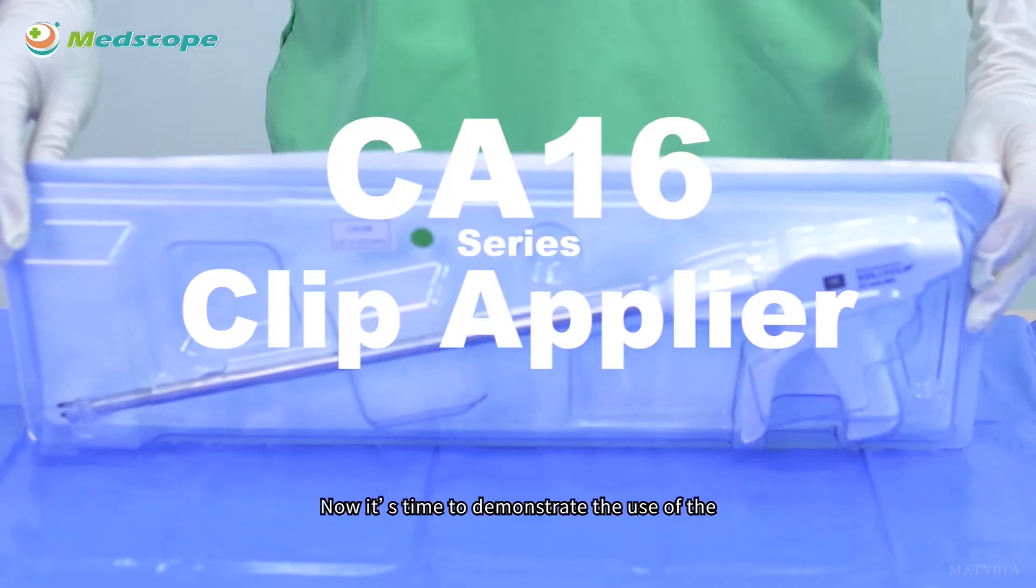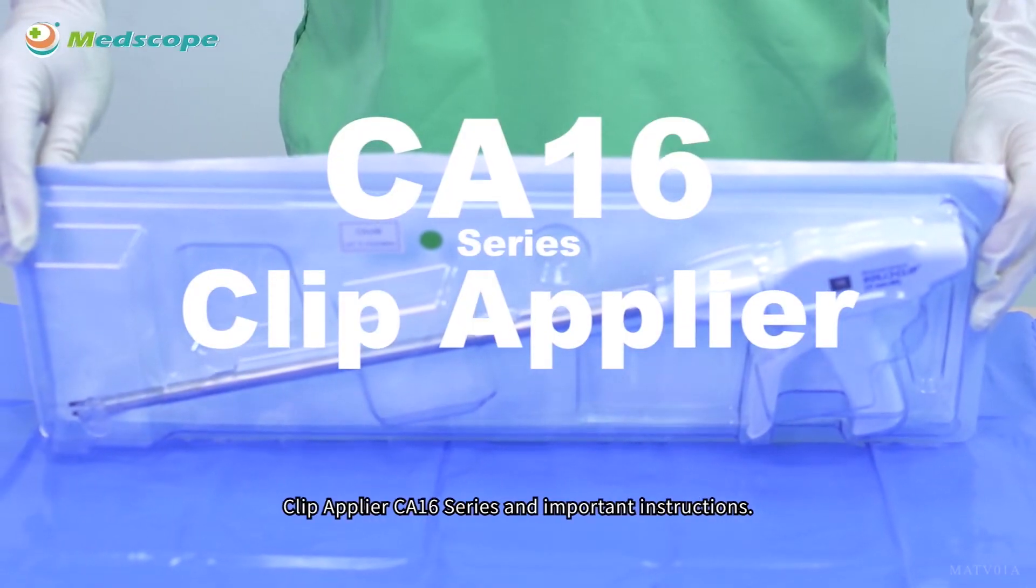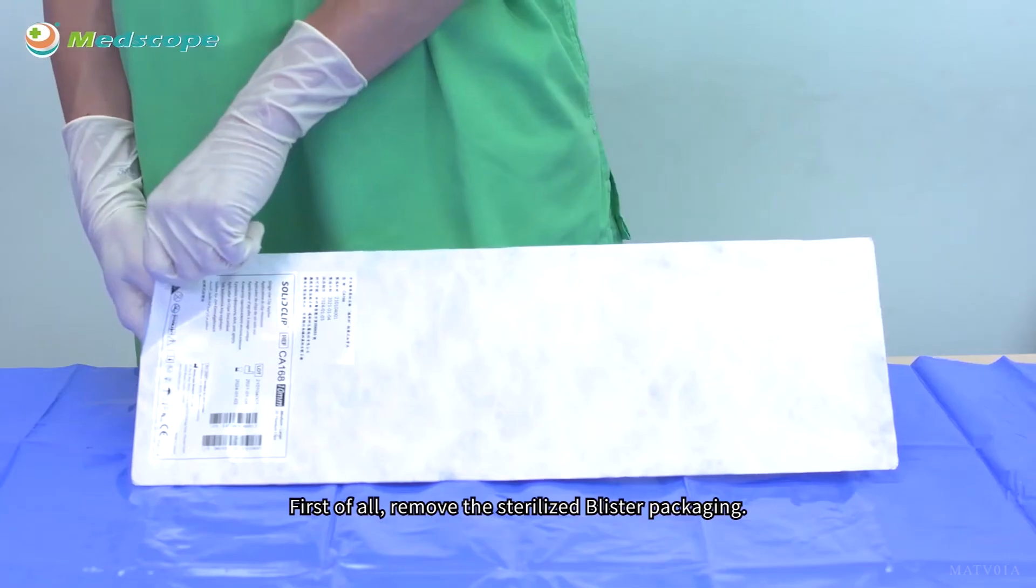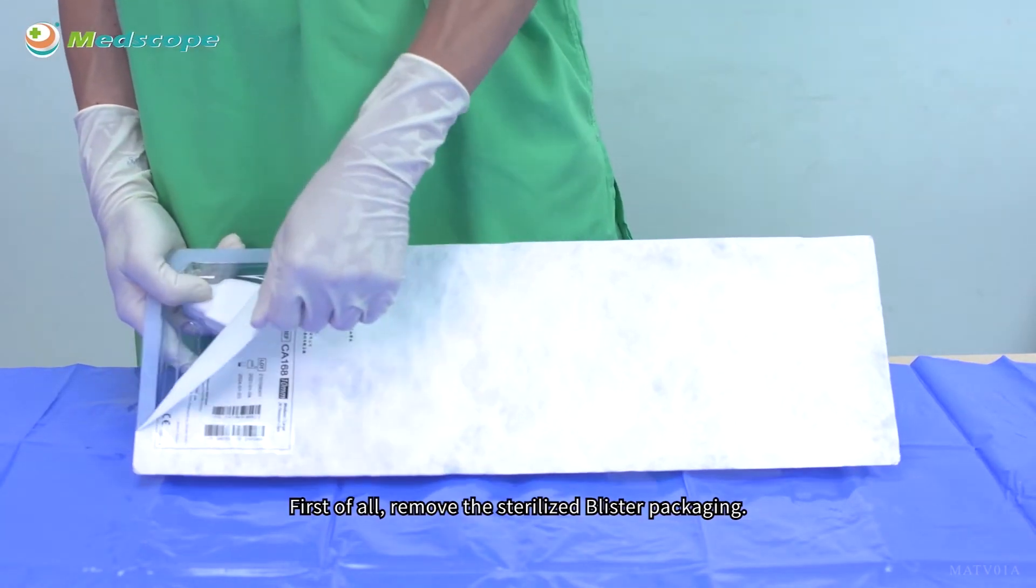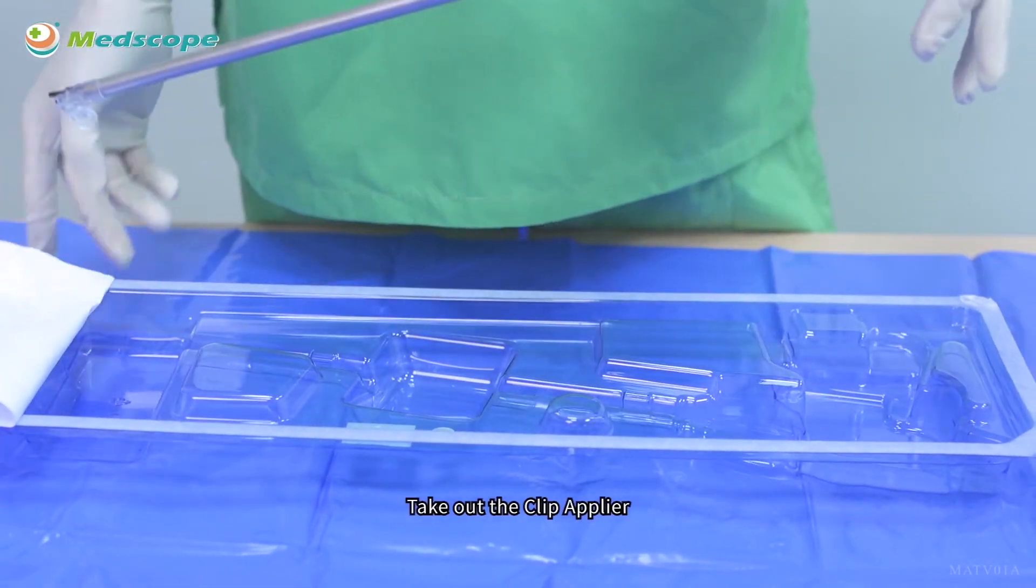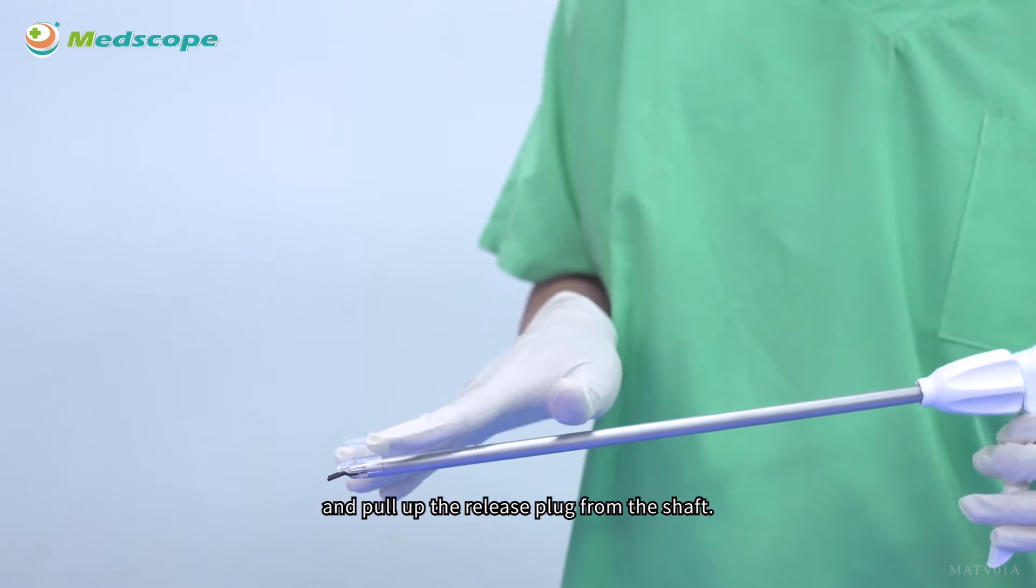Now it's time to demonstrate the use of the Clip Applier CA-16 series and important instructions. First of all, remove the sterilized blister packaging. Take out the Clip Applier and pull up the release plug from the shaft.